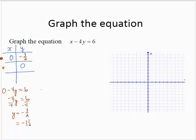Substituting 0 for y. x minus 4 times 0 equals 6. x minus 0 equals 6. x equals 6.